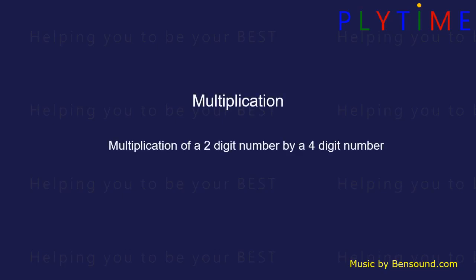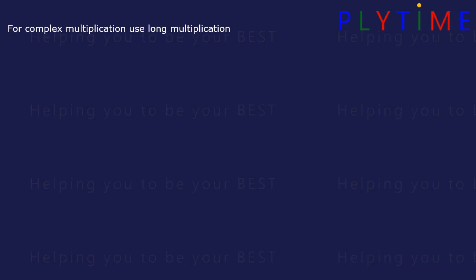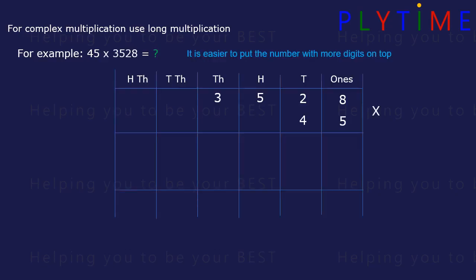Multiplication of a two-digit number by a four-digit number. For complex multiplication, we use long multiplication, like this example. It's easier to put the bigger number on the top and just multiply by two digits.